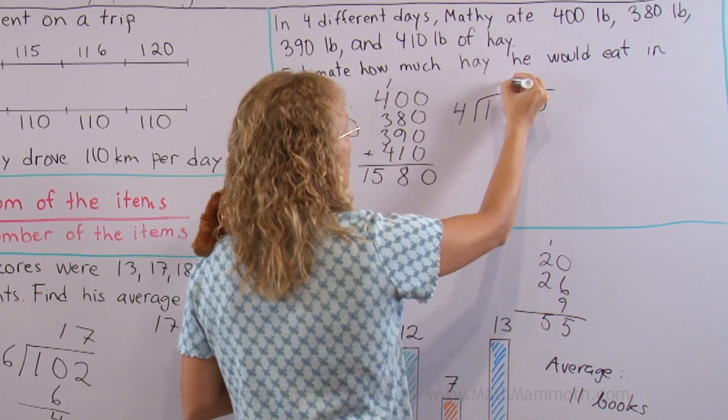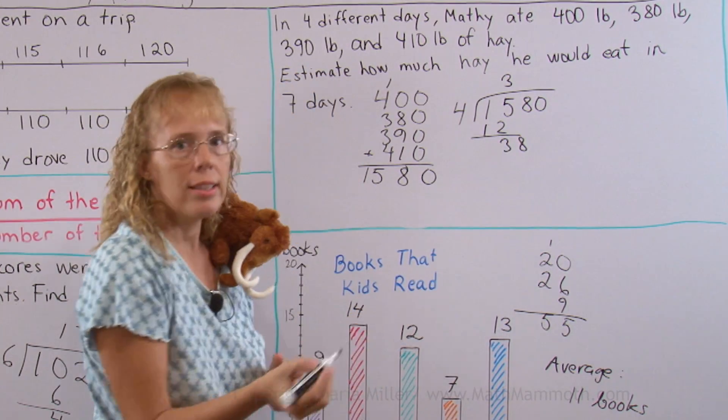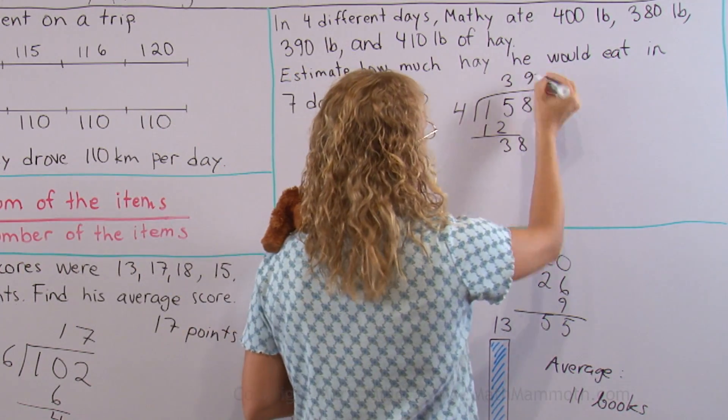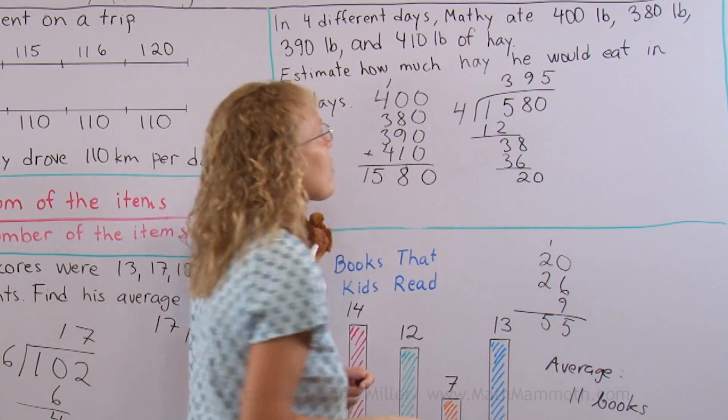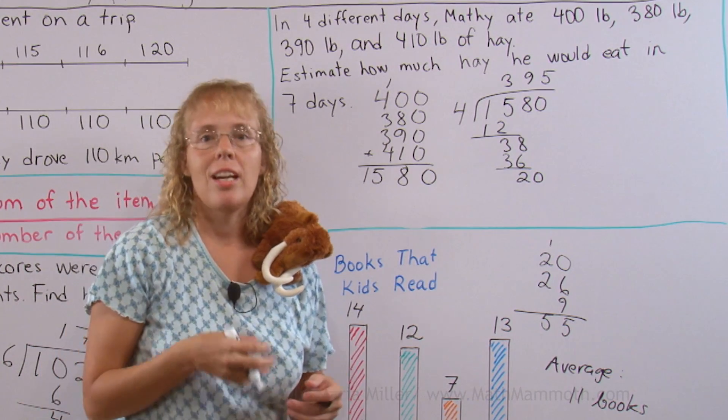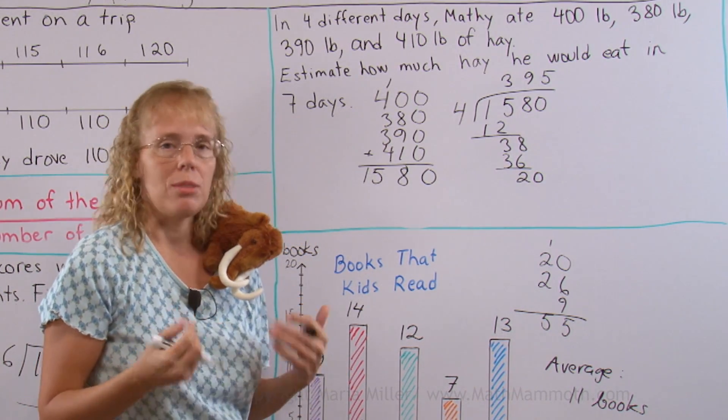Okay, 4 goes to 15 three times. Subtract. 4 goes to 38 nine times. And 4 goes to 2 five times evenly. So the average is 395 pounds. That's how much he eats per day approximately. Okay, on average.